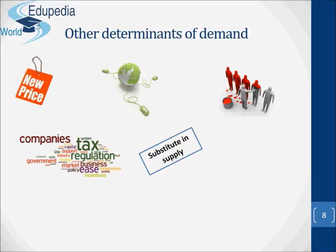The profitability of alternative products — substitutes in supply. If a product which is a substitute in supply becomes more profitable to supply than before, producers are likely to switch from the first good to this alternative. Supply of the first good falls. Other goods are likely to become more profitable if their prices rise and/or their costs of production fall. For instance, if the price of carrots goes up or the cost of producing carrots comes down, farmers may decide to cut down potato production in order to produce more carrots.